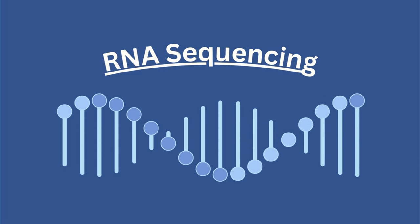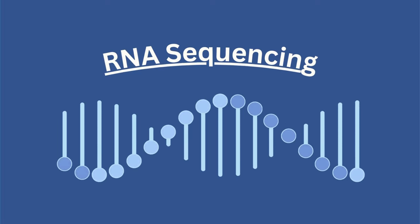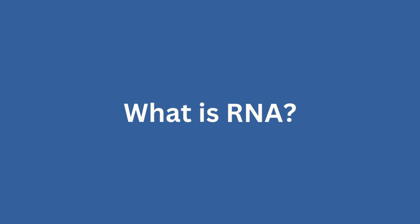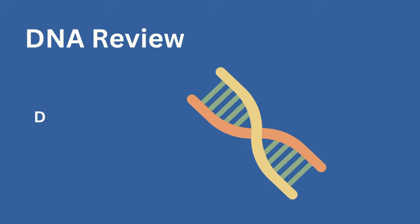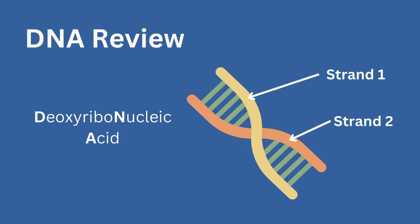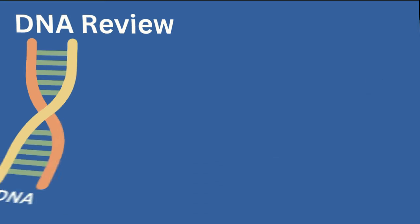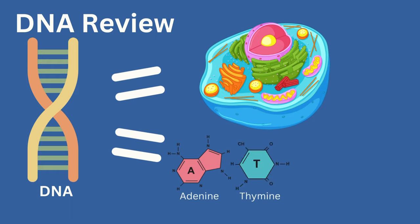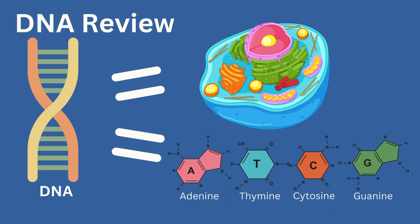Let's delve into RNA sequencing and how it can be used to find answers that DNA sequencing cannot provide. So what is RNA? First, let's review DNA. DNA, or deoxyribonucleic acid, is a double-stranded molecule that contains all our genetic information. It codes for all activities in our cells and is made up of four nucleotides: adenine, thymine, cytosine, and guanine.